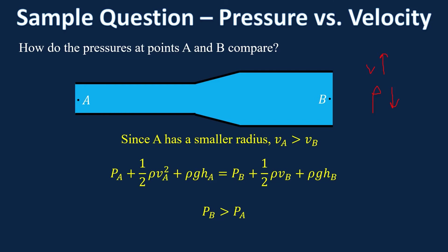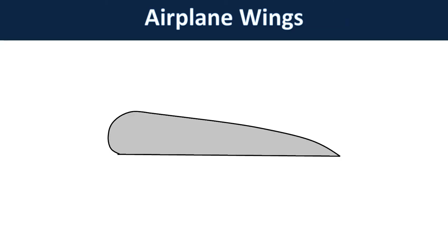That does make a lot of sense. An application is lift for airplanes. Here's an airplane wing — the left end of the wing would be the front. If you have air coming at the wing, the wing is designed in such a way that the air on top is going to be faster than the air at the bottom.